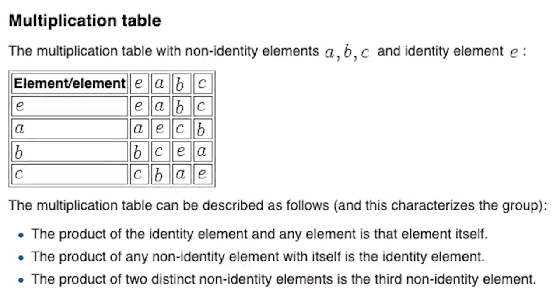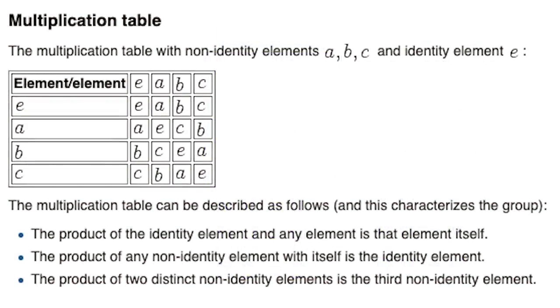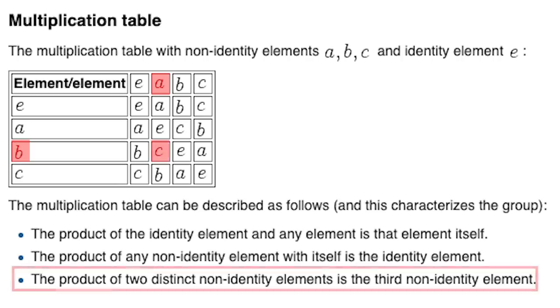Usually an explanation of the Klein-4 group is more generic and technical, but all of this says exactly what we just saw. Like the combination of any two moves, excluding N, yields the third, which is also stated down here.